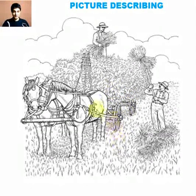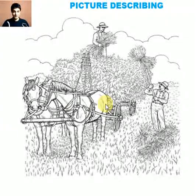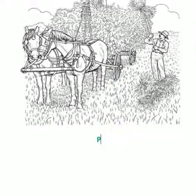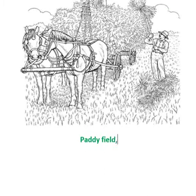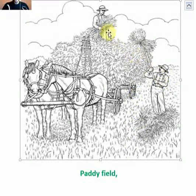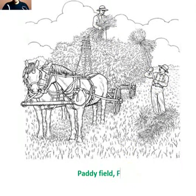I'll point out each item in the picture and write down the vocabulary words for them. First, this is a paddy field, so we write down 'paddy field' — that's our first vocabulary word. Who are these people? They are farmers. So we write down 'farmers.'